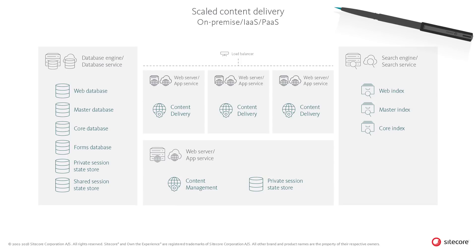In order to serve more simultaneous editors or provide high resilience against system faults on public-facing websites, the content delivery roles can be scaled in a load-balanced fashion. This ensures that the load of incoming traffic is balanced across multiple servers, and that one or more servers or services are ready to take over in the case of faults on a single server or service. The number of content delivery roles can be increased to fit any need in traffic or load. However, in some cases it might also be needed to scale the number of search engines or database engines to avoid bottlenecks in other parts of the system.